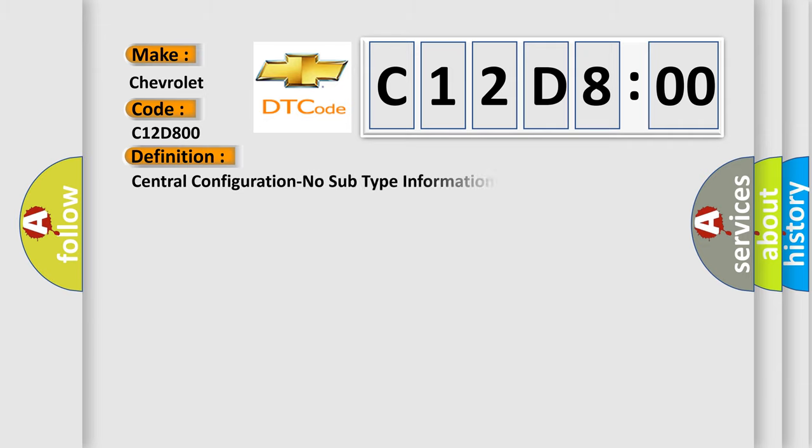The basic definition is central configuration, no subtype information. And now this is a short description of this DTC code.